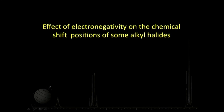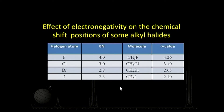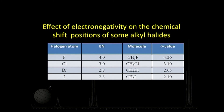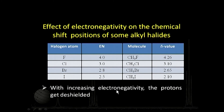Looking at the effect of electronegativity on chemical shift of methyl halides (CH₃X): as we go from CH₃F to CH₃Cl to CH₃Br, the electronegativity decreases and so does the delta value. Fluorine is highly electronegative, so it pulls electrons away from carbon, which in turn pulls electrons from the protons, shifting them highly down field. Chlorine does this to a lesser extent, bromine even less. There is a direct correspondence between the electronegativity of the attached group and the delta value.